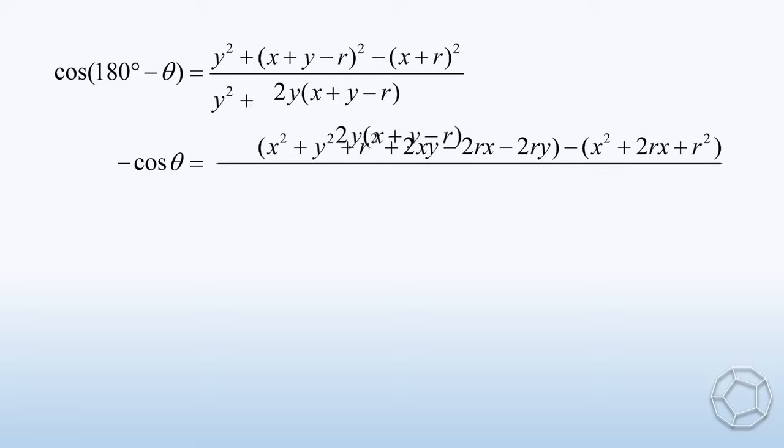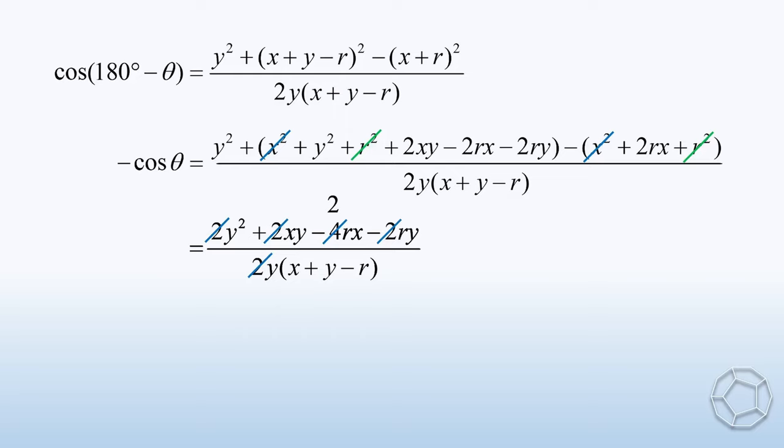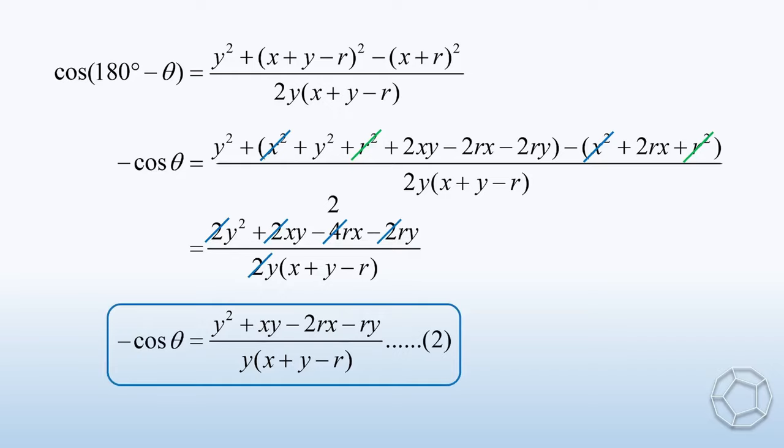We keep all the rest of the terms. Crossing out the X² terms and R² terms and group the rest of the like terms together, we have (2Y² + 2XY - 4RX - 2RY) / 2Y(X + Y - R). Cancel out the factor two. Then, we get an equation of negative cosine theta. Let's call this equation 2.